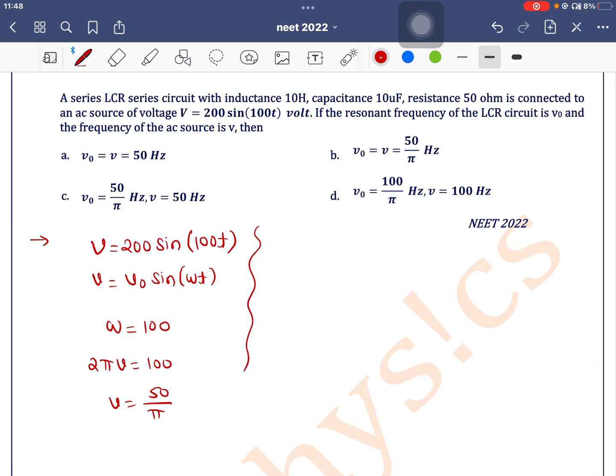What is the resonant frequency? The formula for resonant frequency is 1 by 2 pi under root of LC. So, 1 by 2 pi under root of L, what is L here? L is 10 and C is 10 into 10 to the power minus 6. This is 1 by 2 pi under root of 10 to the power minus 4.